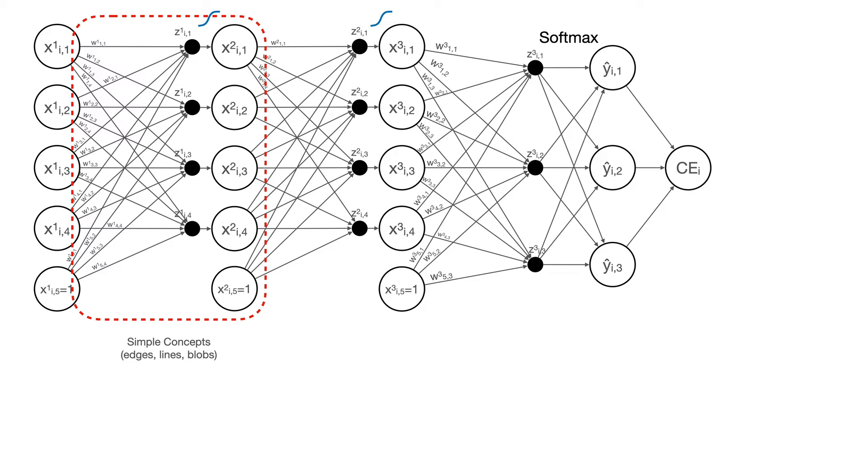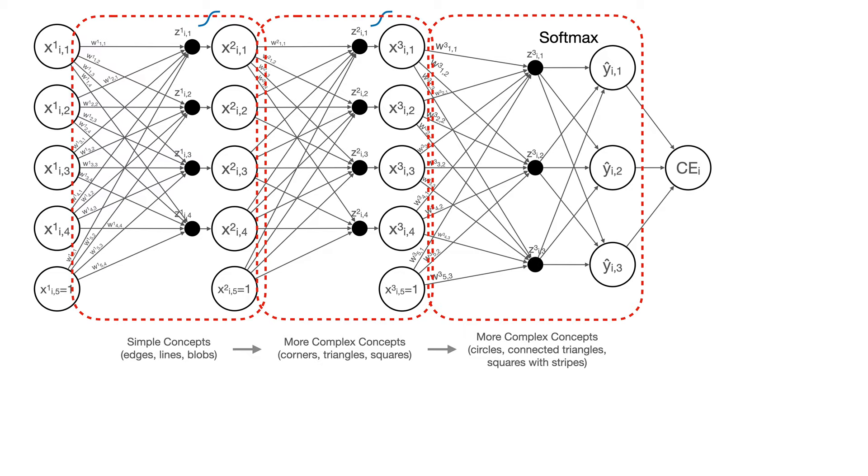it builds off of those simple concepts to identify more complex concepts like corners or triangles or squares. And then the third hidden layer builds off of those concepts to identify even more complex things like circles or connected triangles or squares with stripes.